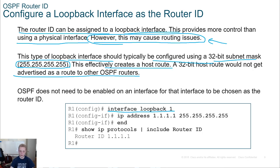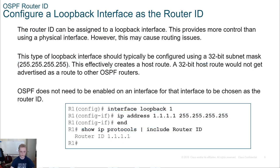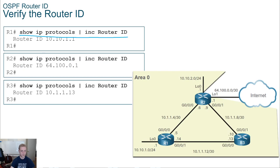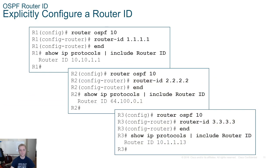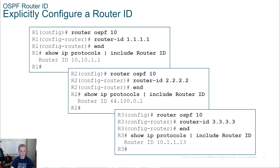Here they're configuring a loopback with an all-255 subnet mask, then using 'show ip protocols | include router-id' to verify it. You can verify the router ID with 'show ip protocols'. We can also explicitly configure it by going into 'router ospf 10' and using the router-id command with whatever ID we want - it looks like an IPv4 address but isn't. Don't forget to exit your router configuration mode and get back to privileged exec mode.